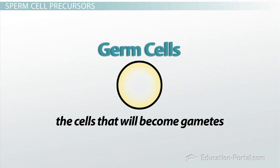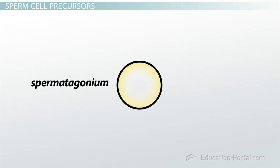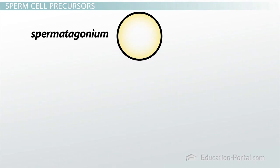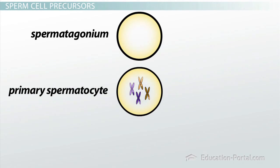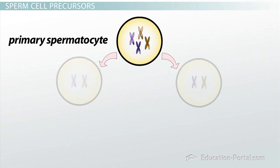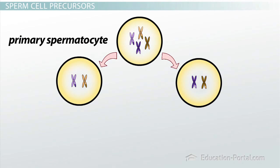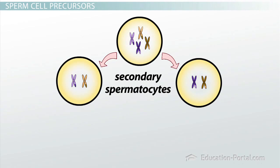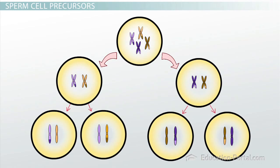The germ cells found in the testes are called spermatogonia. Every day, somewhere around 25 million spermatogonia enter meiosis and become primary spermatocytes. After the first meiotic division, the cells double in number and are called secondary spermatocytes. Once the second meiotic division is completed, but before the haploid cells have had a chance to differentiate into actual sperm, the cells are called spermatids.